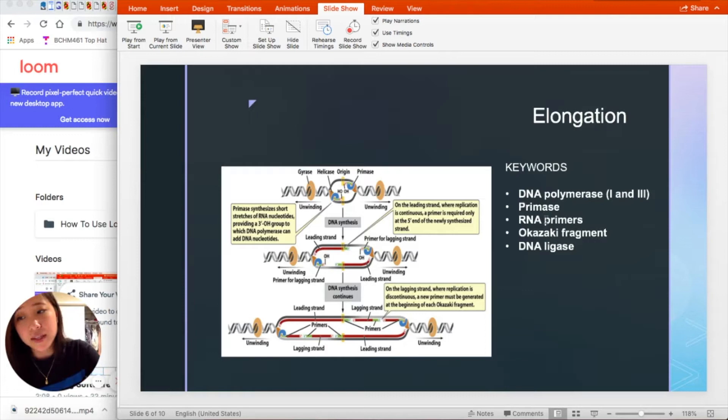And on the leading strand, a primer is required at the five prime end. And on the lagging strand, a new primer must be generated at the beginning of each what would be an Okazaki fragment. And Okazaki fragments are short links of DNA that are produced by discontinuous replication of the lagging strand.